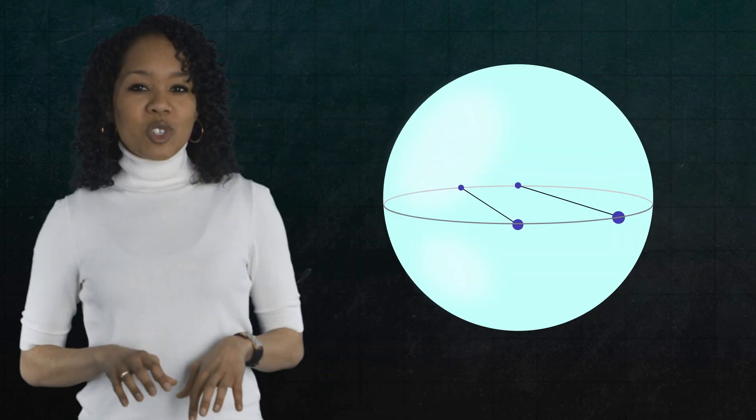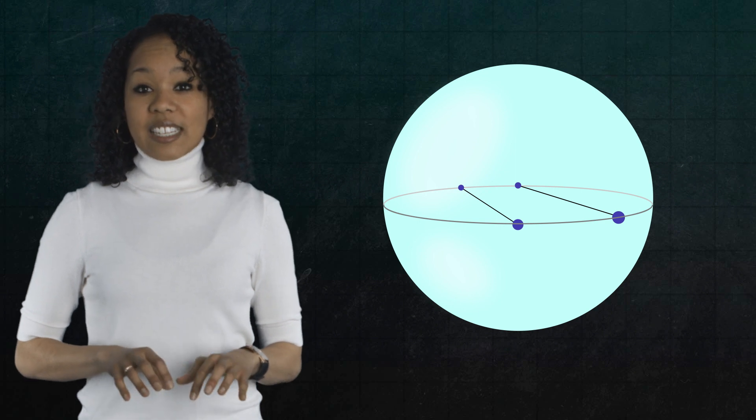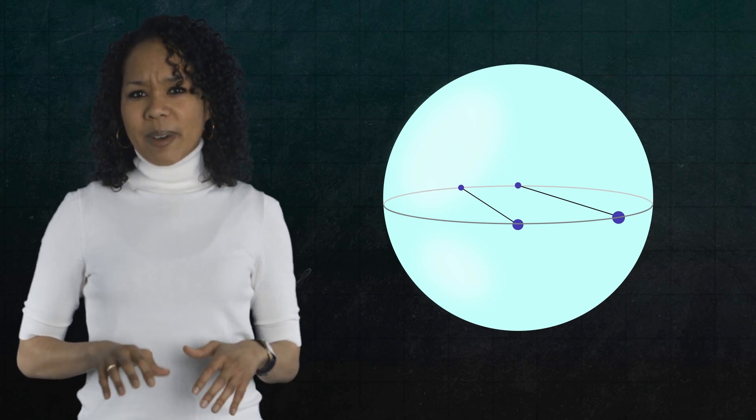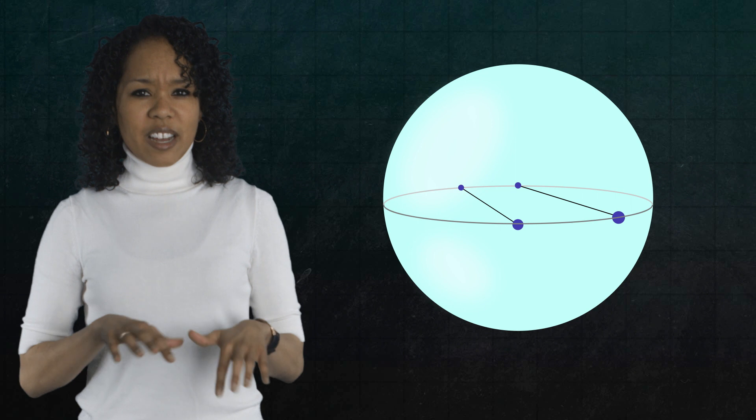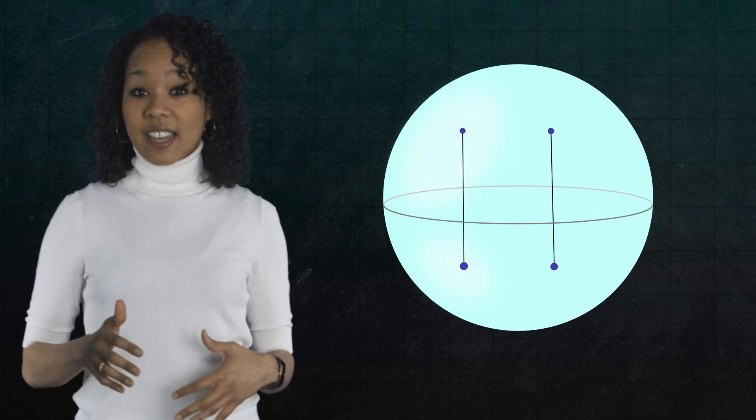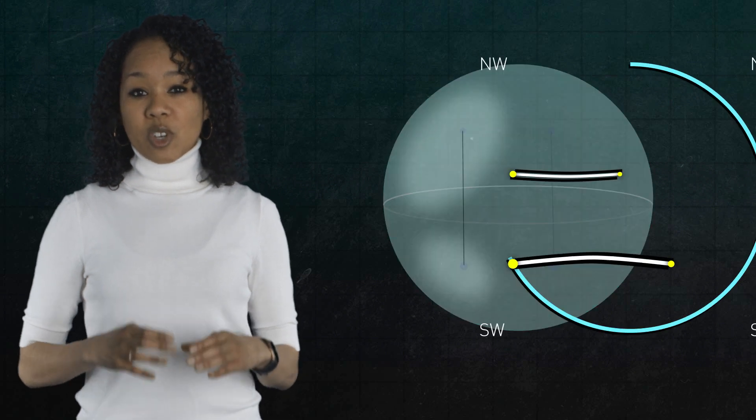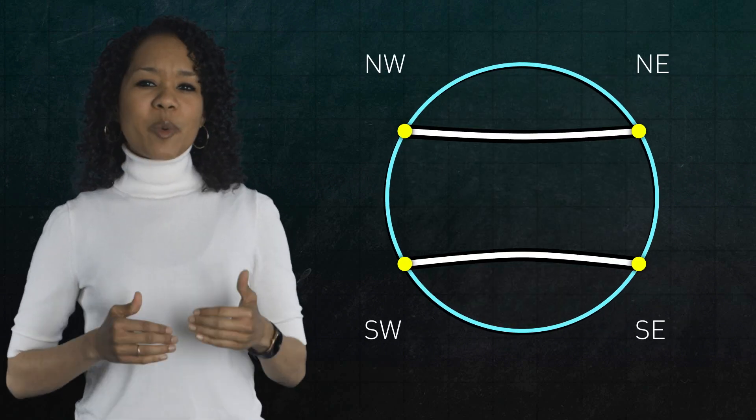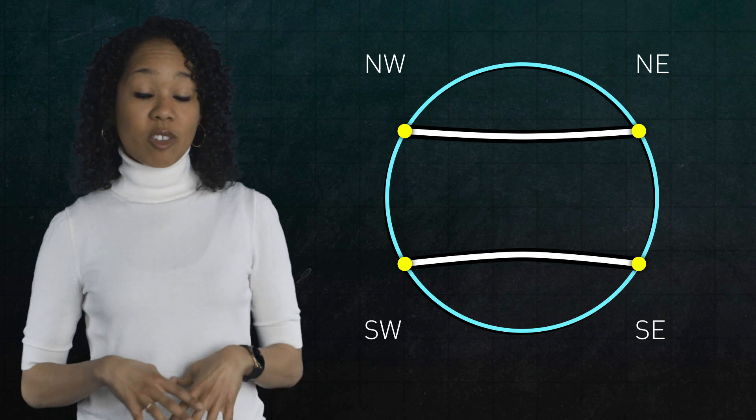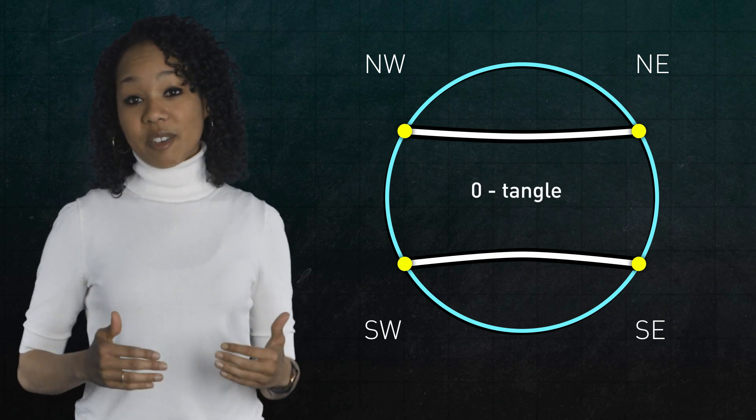Imagine you have two strings, and each end is attached to the inside of a sphere, but the ends aren't glued in place, they're not fixed, so they can easily slide around like this. Now, for simplicity, instead of drawing the full sphere, we'll just show a circle as the boundary. We'll start with the strings in this position, where they don't cross each other. It's called the zero tangle.